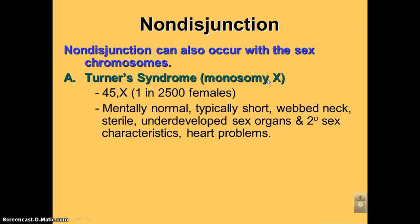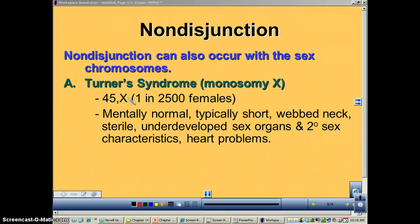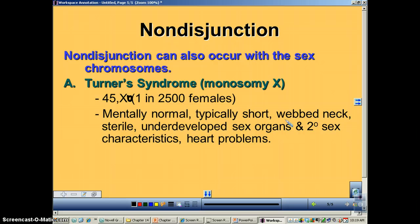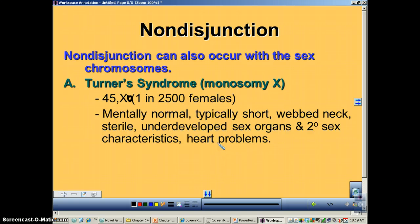Turner syndrome, also known as monosomy X, is notated as 45,X0 in karyotype notation. It occurs in about one in 2500 females. They're typically mentally normal with no cognitive defects. They'll be short — difficulty reaching five feet — and have a webbed neck, meaning the neck is much wider at the bottom than the top. Their sex organs don't work well due to the missing chromosome, so they can't have children, and they often have heart problems that can be corrected with surgery in infancy.